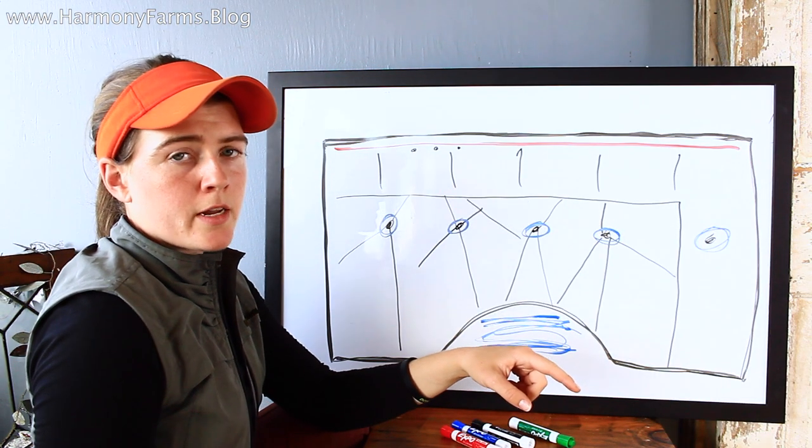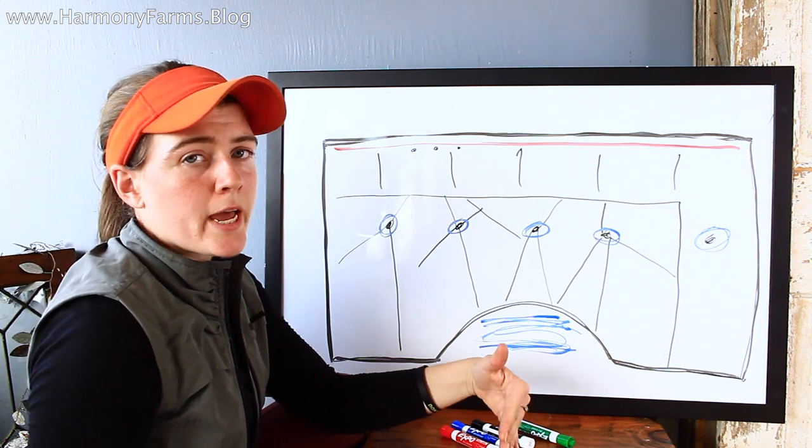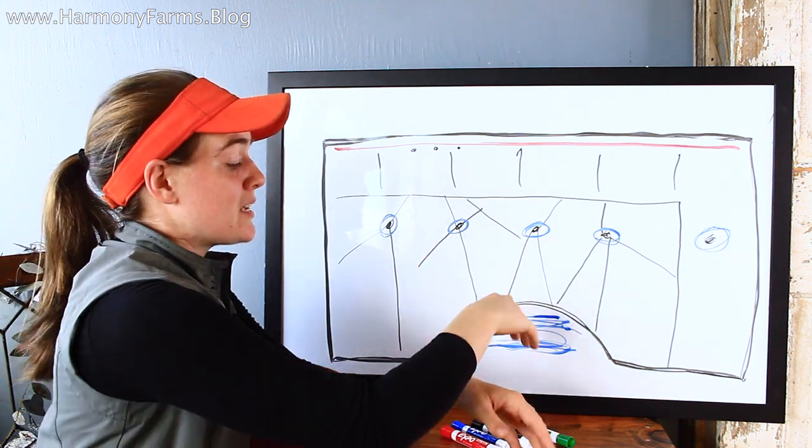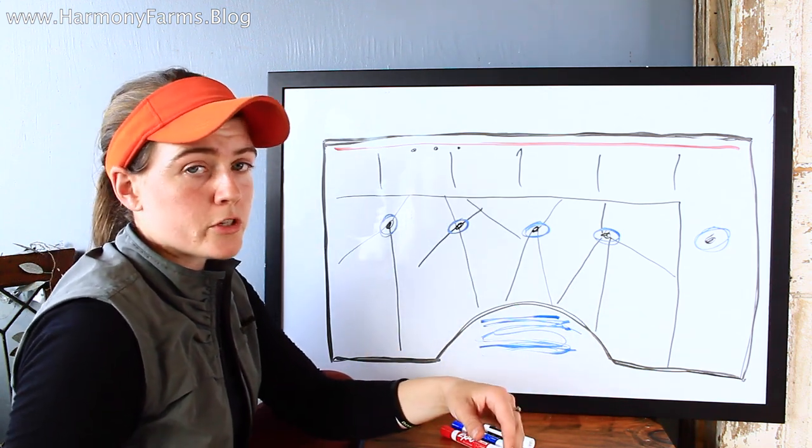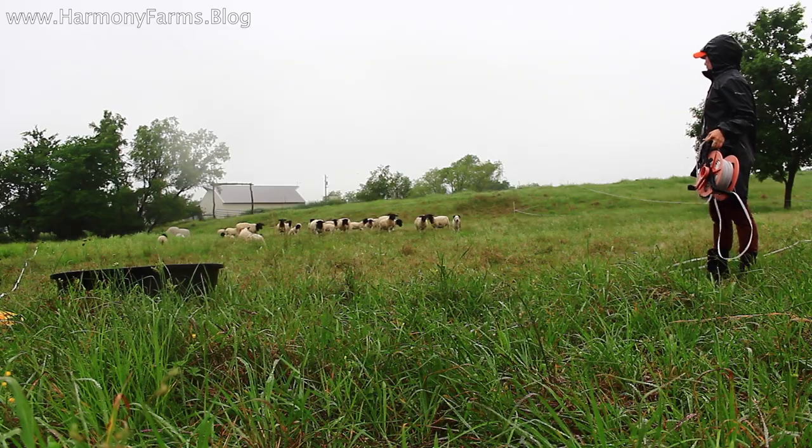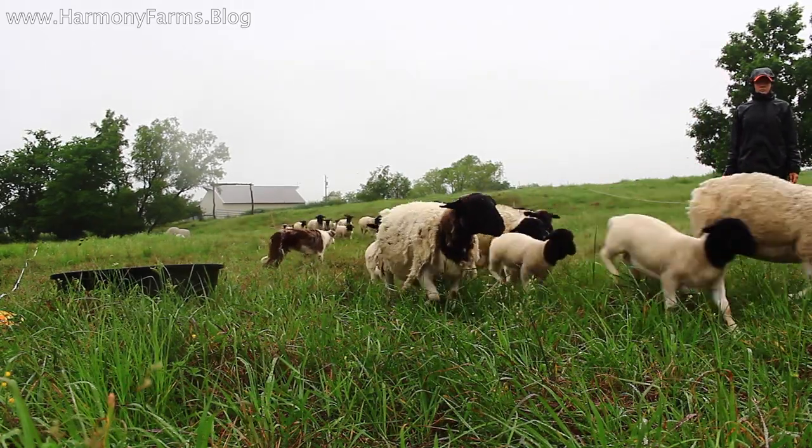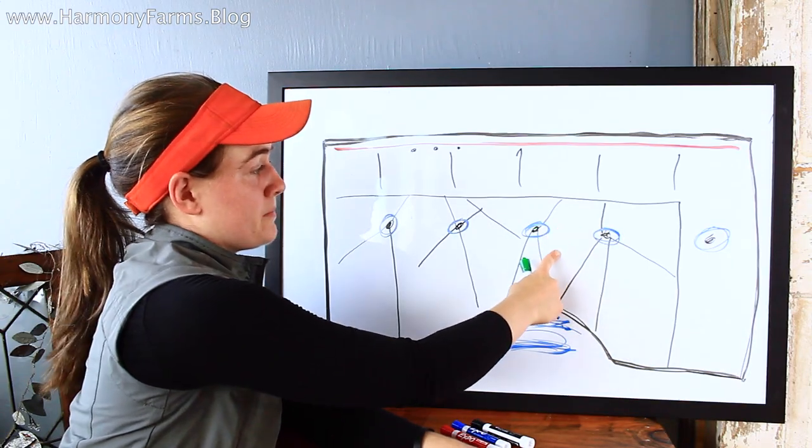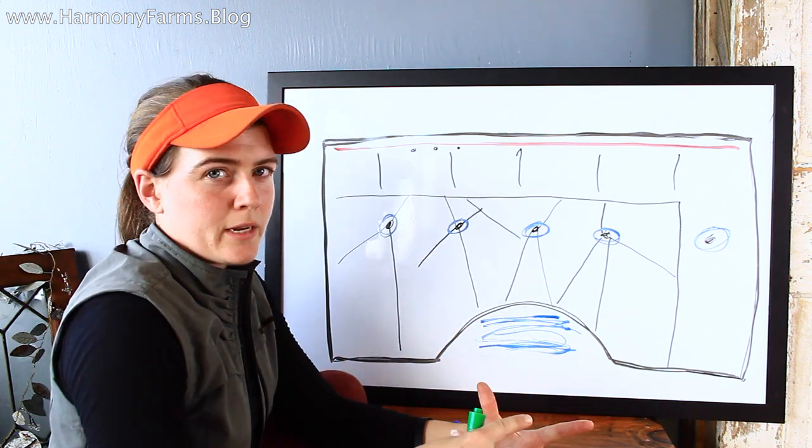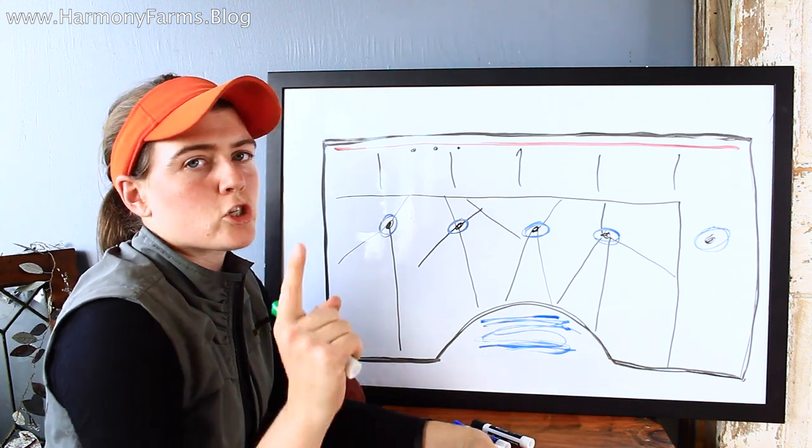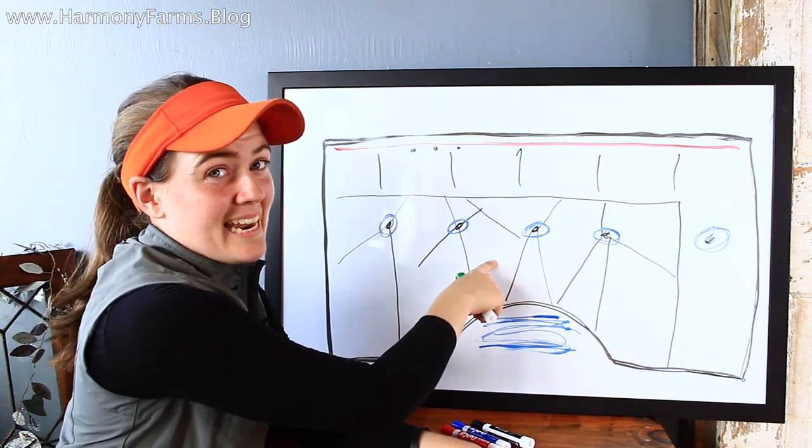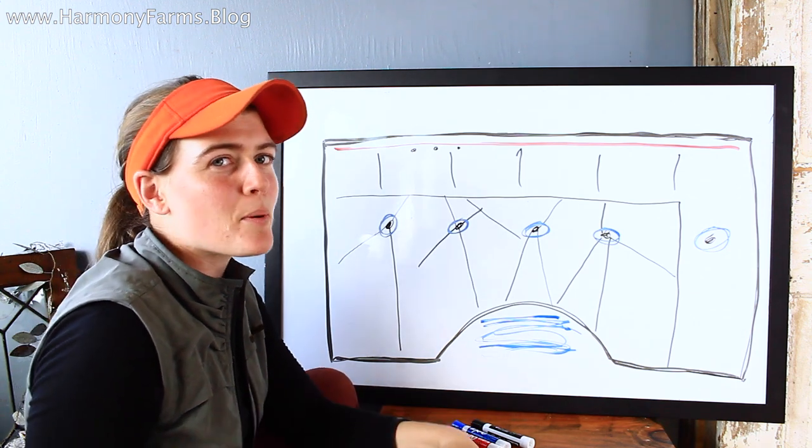So the next point on the grazing plan infrastructure would be the shade. And this was, I was particularly blessed in this month because this is a pasture that does not have a lot of shade. It makes it really difficult to graze in the small paddocks that I'm breaking it down into. But this month was raining and cloudy like crazy, so I planned these paddocks where there is absolutely no shade, where it's in the middle of the pasture, I planned to use those paddocks during cloudy days.